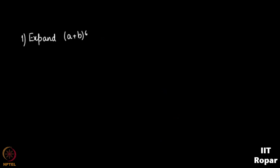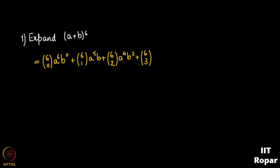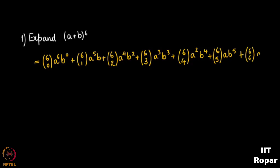The first problem: expand (a + b)^6. This is quite a direct problem — you just have to apply the formula. So (a + b)^6 gives me: 6C0·a^6·b^0 + 6C1·a^5·b + 6C2·a^4·b² + 6C3·a³·b³ + 6C4·a²·b^4 + 6C5·a·b^5 + 6C6·a^0·b^6.